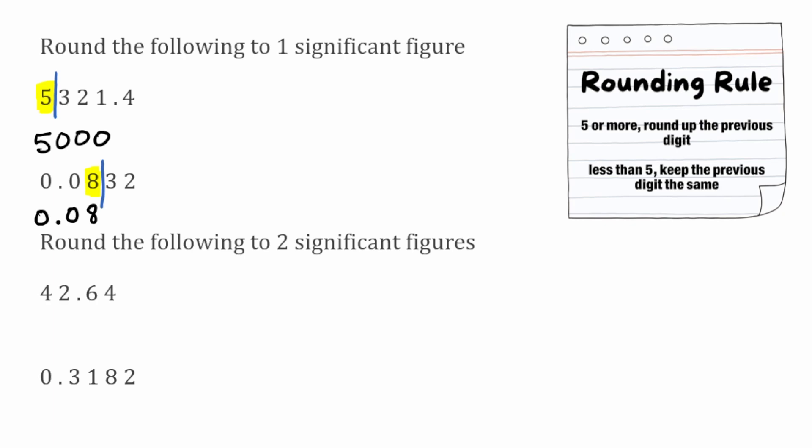Moving on, we now want to round to two significant figures. To round to two significant figures, we again find our first non-zero digit — in this first example that would be the four. Moving left to right, four is my first significant figure and two would be my second significant figure. I'm going to draw my line down, and it goes through the decimal point on this one.